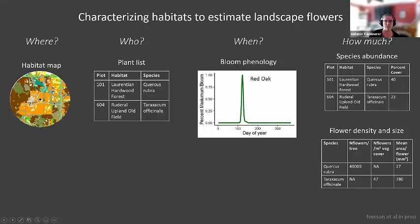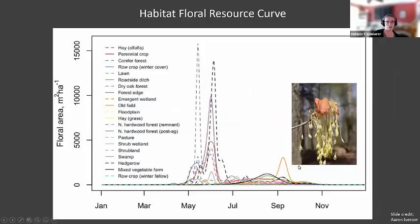Essentially, we need a habitat map of some sort, information about which plants are present in a given habitat, information on the phenology of flowering, and then how much flowering you might expect. I tend to separate this into species abundance information and flower density and size — so at a species level, what's the typical number of flowers per unit area and also the average size of a flower. By combining all this information, Aaron developed floral area curves for the Finger Lakes — meters squared of flowers per hectare of habitat for these 22 different habitat types. There's massive variation in both the timing and magnitude of flowering between different habitats.